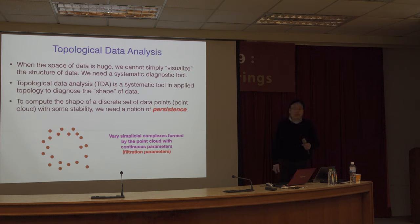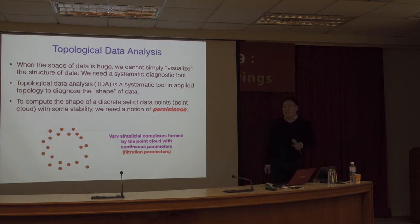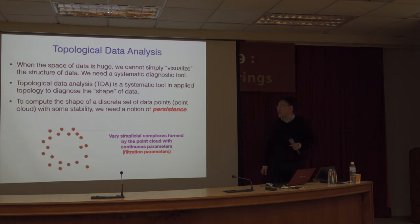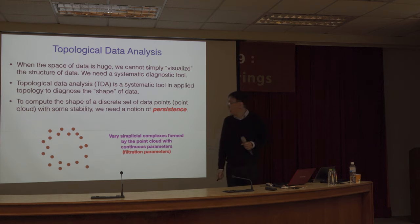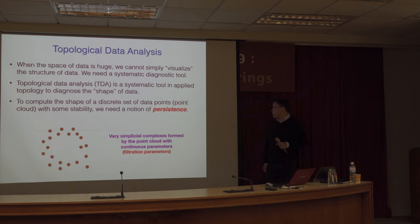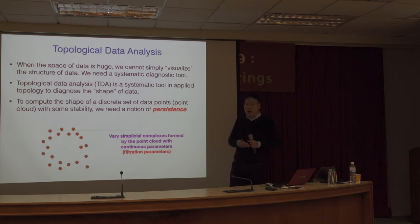This remarkable unity of physics suggests we may use similar tools to study both the structure of the landscape and the structure of the cosmos. When the dimension of the space is huge, we can no longer visualize the structure of data and would like a more systematic tool. Topological data analysis is a tool in computational topology that allows us to systematically diagnose the shapes of data. To compute the shape of a discrete set of data points with some stability, we need a notion of persistence — considering a nested sequence of topological spaces and tracking topological features that persist as we vary the filtration parameter.